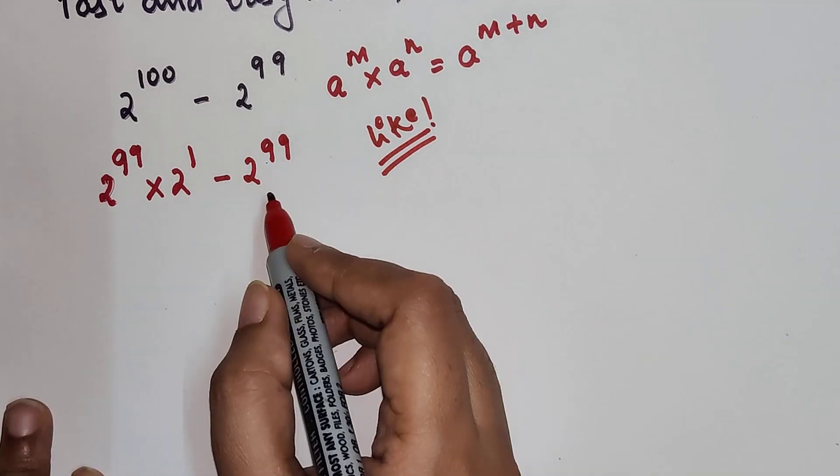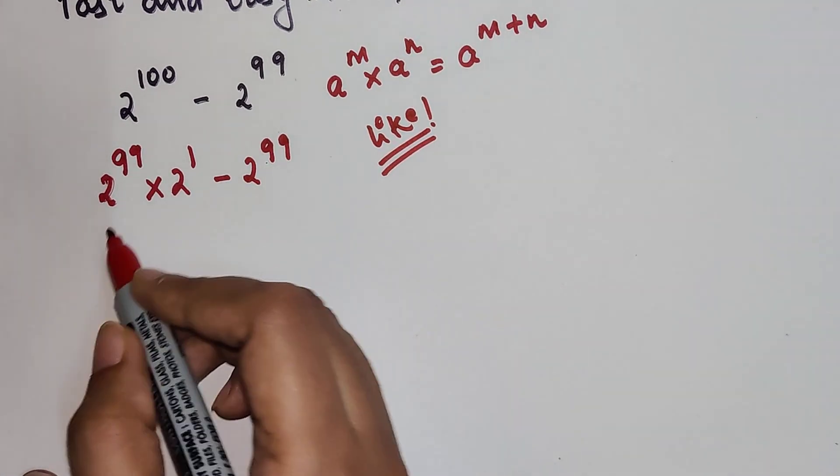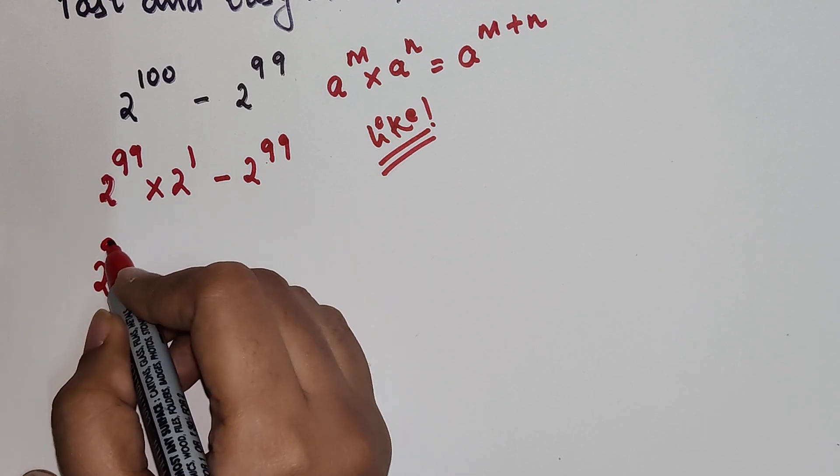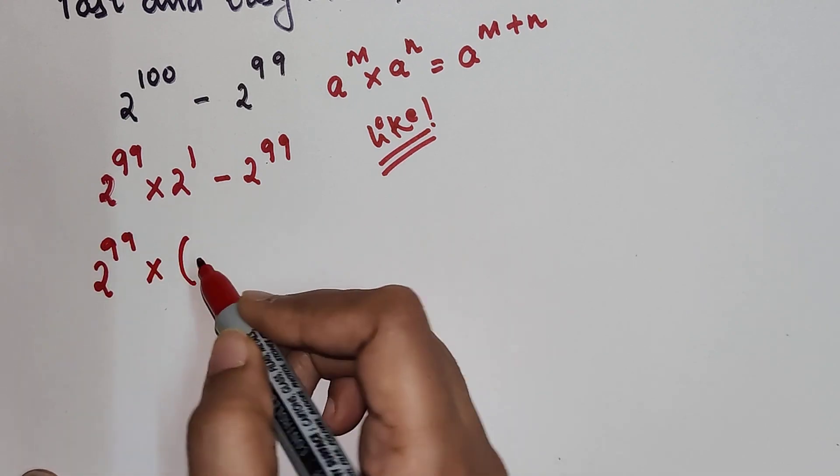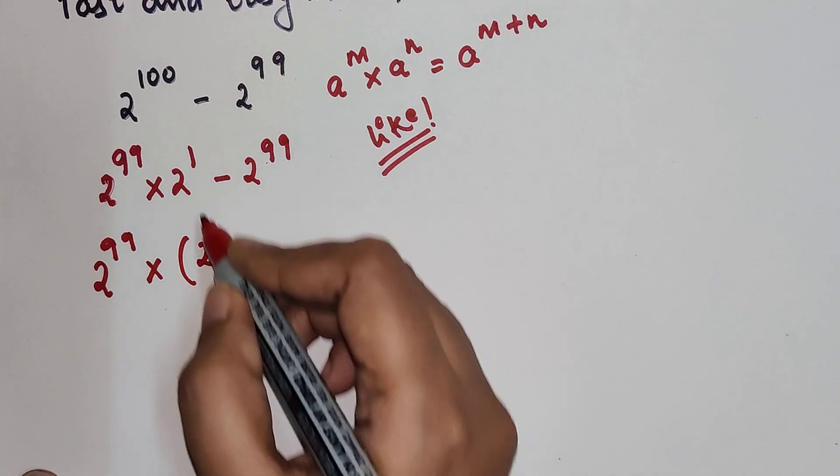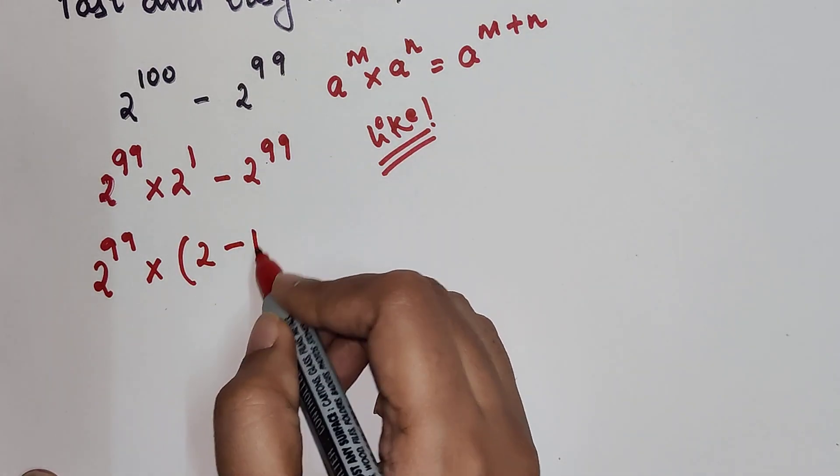Now we know there is something which is common. What is common is 2 raised to 99, and we can take the brackets. So this is 2 raised to 1, which is 2 minus 1.